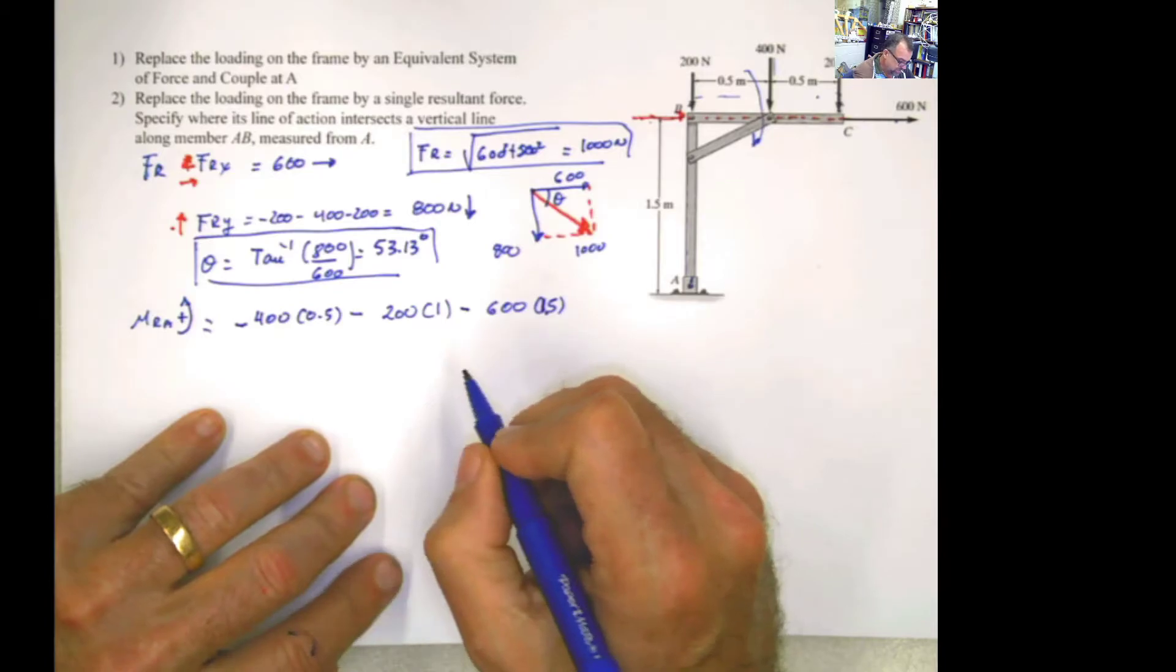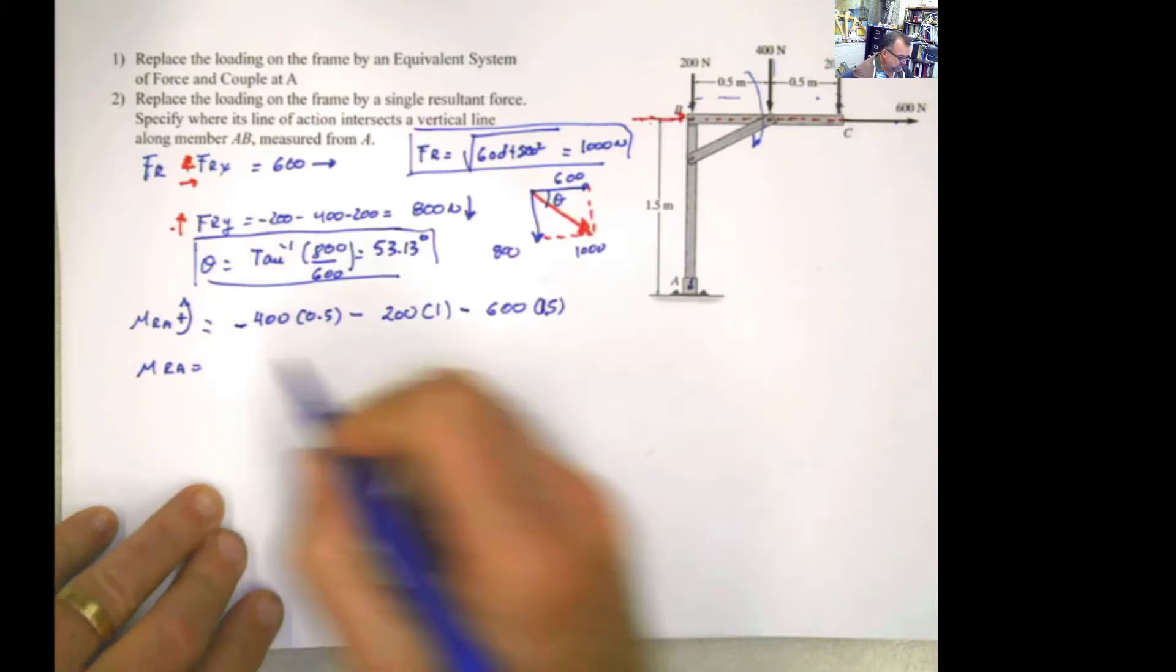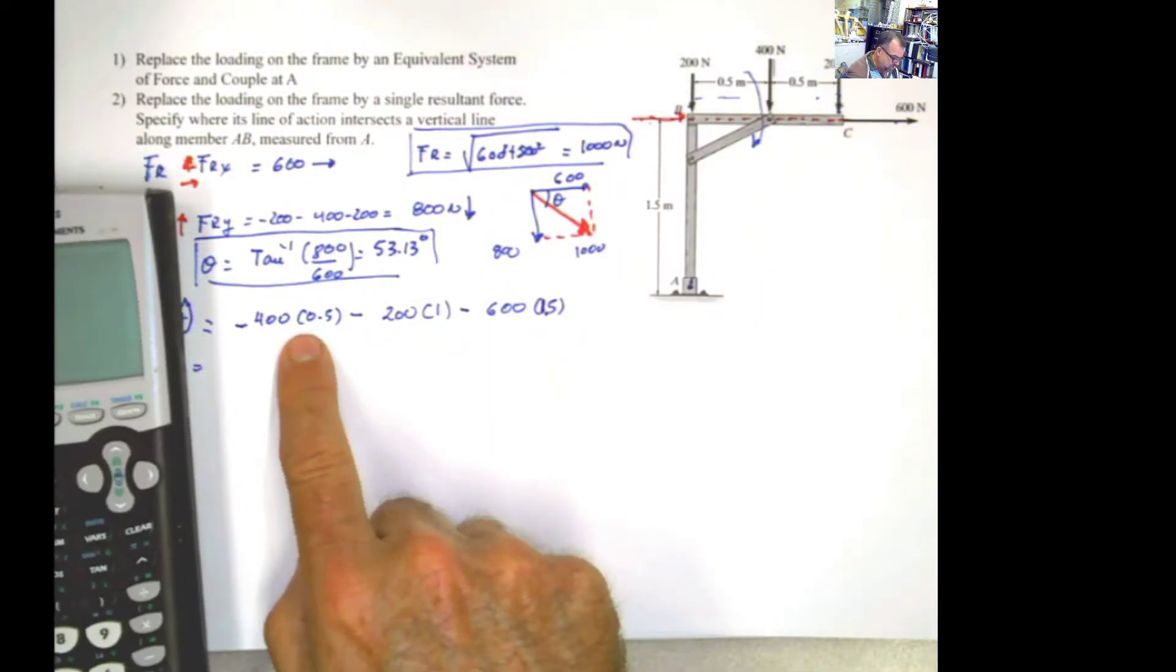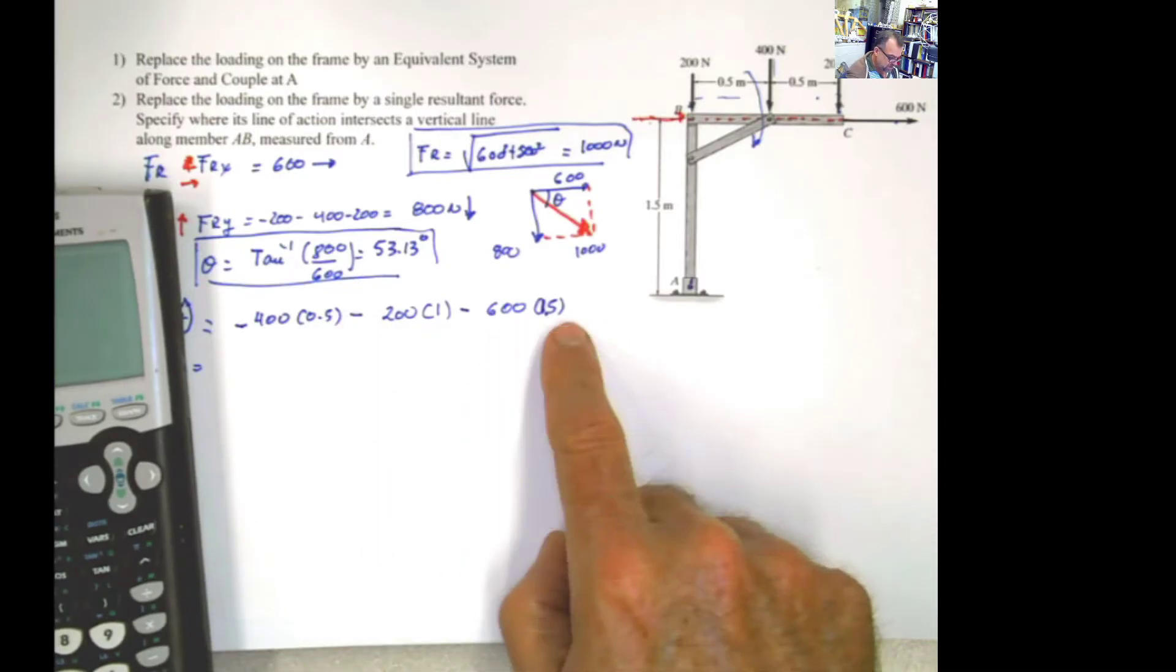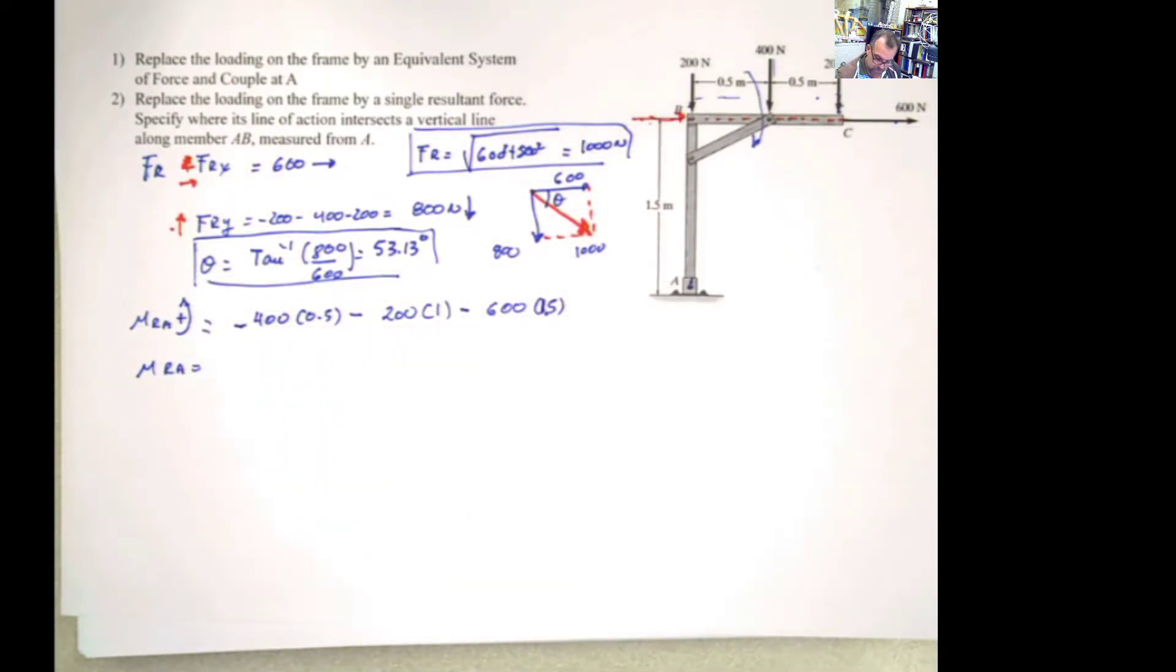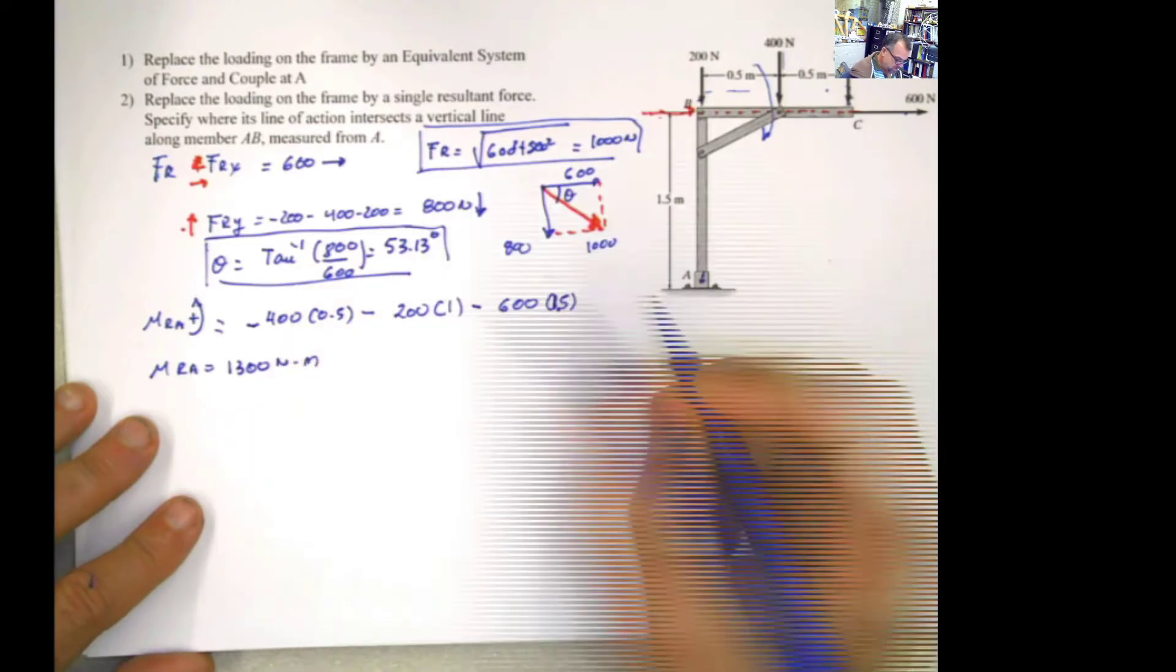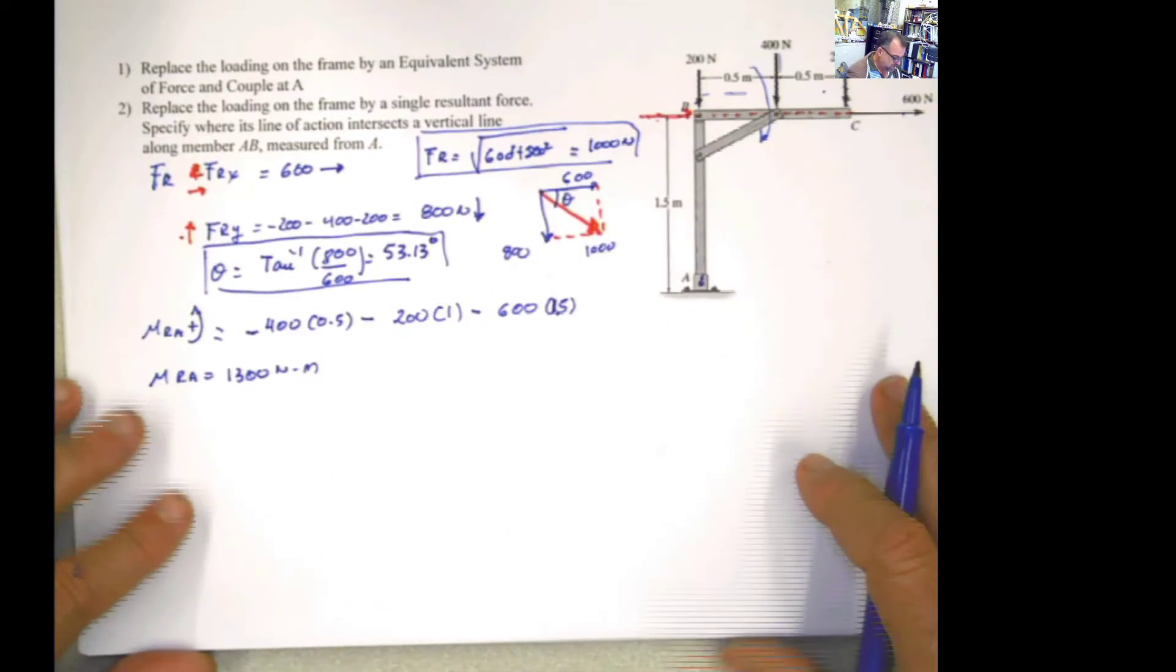So then you can calculate that moment. The resultant moment of A is going to be, that is my calculator here. So this is 200. This is 200, 400, and this is 900. So 1,300. That's going to be 1,300. That would be the moment. 1,300 newton meter. This is 900. And this is 200. And this is 200. Yes, 1,300 newton meter.